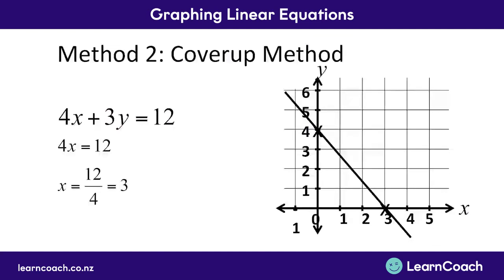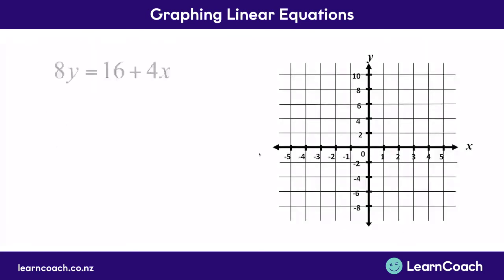I want to show you one more version of this cover-up, because sometimes you can be asked to rearrange before you even do cover-up. You'll notice here that we have the x and the y on the same side, and this is going to be your goal with the cover-up method. So if I gave you a tricky equation like 8y equals 16 plus 4x, you'll notice that the x and the y are on different sides. We want to put them on the same side. So we're going to put this 4x on the other side of the equals sign, and we do this by taking 4x away on both sides. Taking 4x away gives us minus 4x plus 8y, which leaves us with 16.